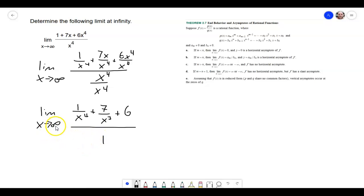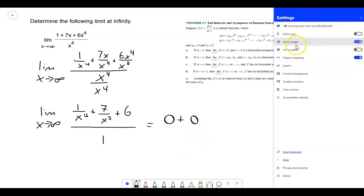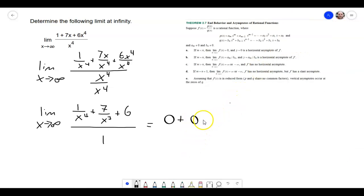Now, because we did it that way, when we plug in the positive infinity, 1 over the number that's growing large without bound, that's just going to be 0. So this is really just going to be 0 plus, and 7 divided by a number that's getting bigger without bound, is going to be another 0. Plus, this is just staying 6 all over 1, and that's just going to be 6.